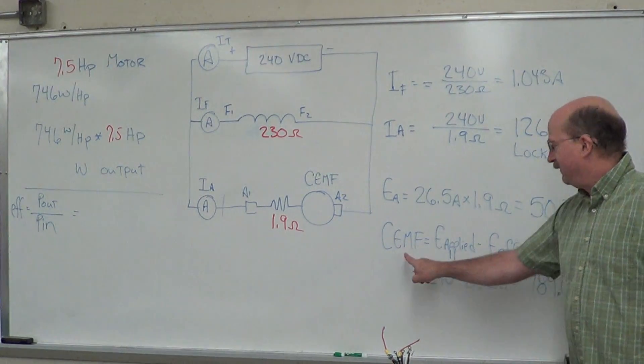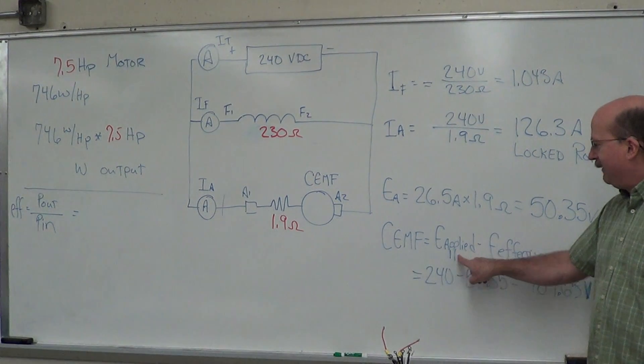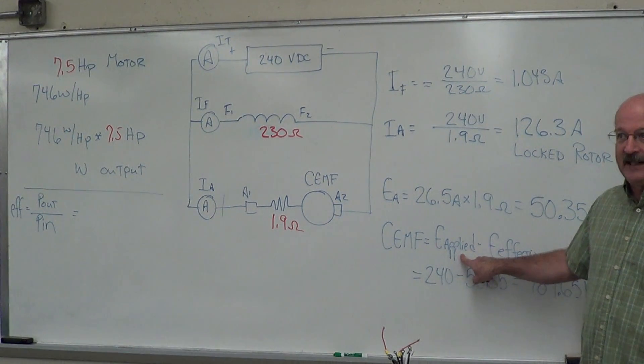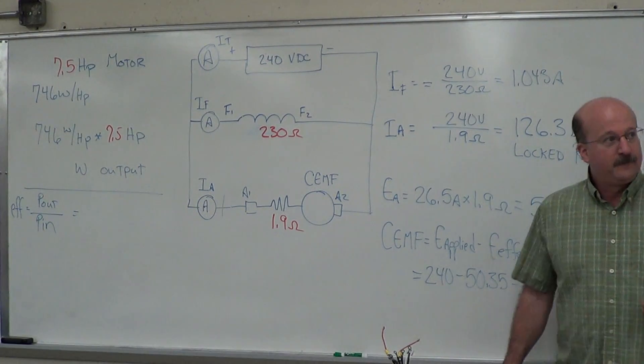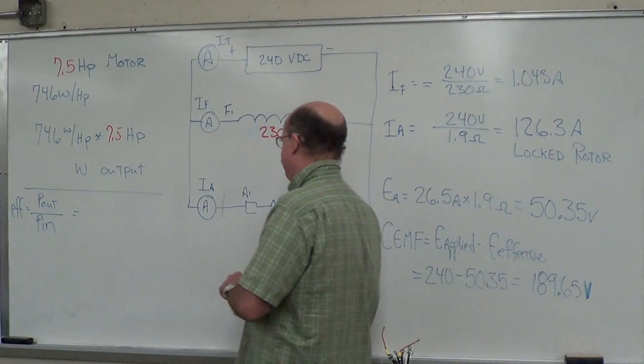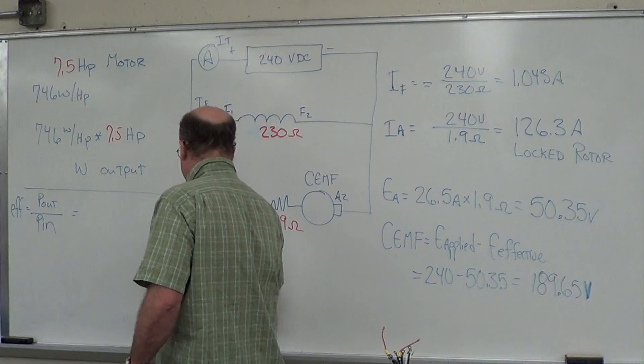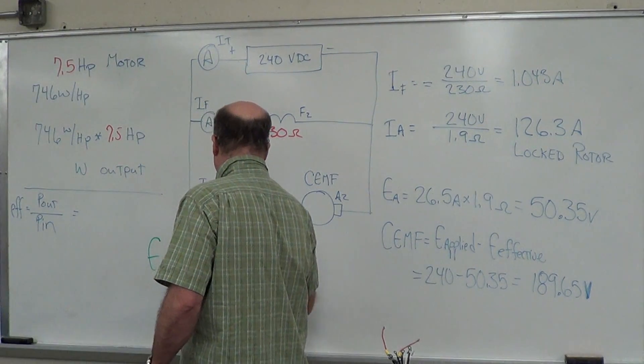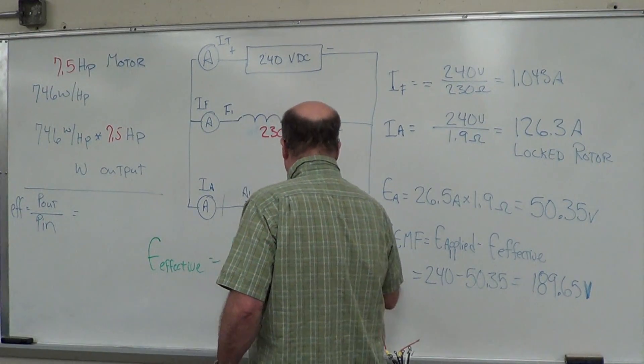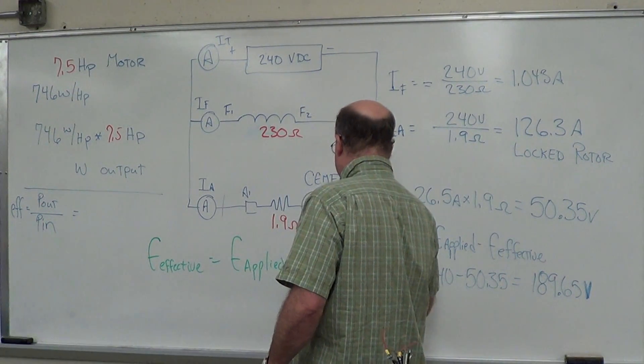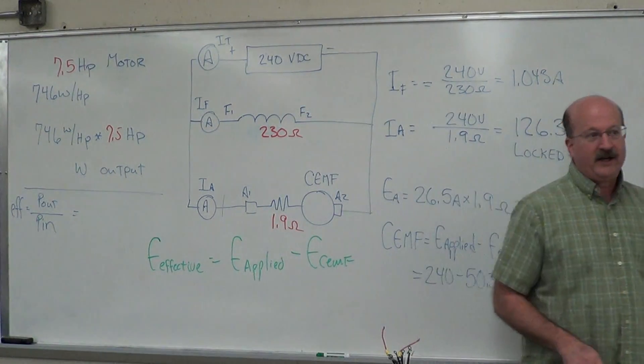If the counter-EMF goes down, what happens to my applied voltage? If the counter-EMF goes down, the applied voltage or the effective, not the applied voltage, the applied voltage stays the same. The effective voltage goes up. If I rewrite this equation, the effective is equal to the applied minus your counter-EMF.